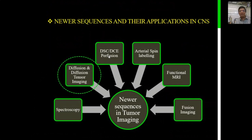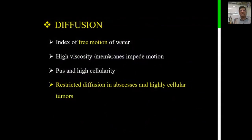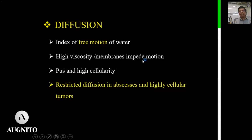Let's now move on to how diffusion and diffusion tensor imaging help differentiate high-grade gliomas from low-grade gliomas or other entities. Diffusion is basically an index of free motion of water in the intra- and extracellular compartments of the brain. Anything with high viscosity or dense membranes will impede motion and show restricted diffusion. Therefore, lesions with high cellularity — such as high-grade gliomas — and those containing pus — such as abscesses — will show restricted diffusion.